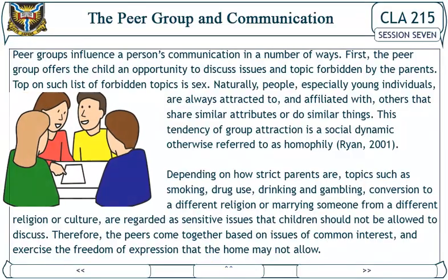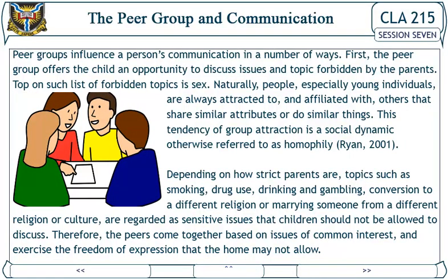Peer groups influence a person's communication in a number of ways. First, the peer group offers the child an opportunity to discuss issues and topics forbidden by the parents. Top on such a list of forbidden topics is sex. Naturally, people, especially young individuals, are always attracted to and affiliated with others that share similar attributes or do similar things. This tendency of group attraction is a social dynamic otherwise referred to as homophilia.